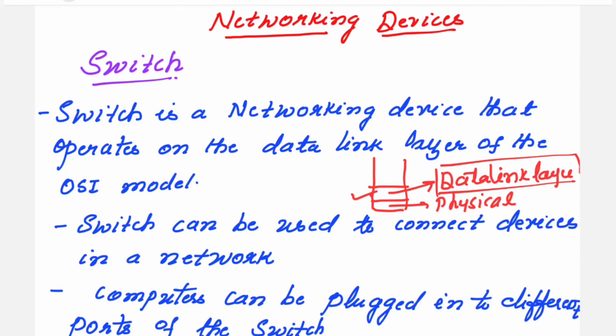Previously we have seen that hub is used to connect devices in a network. Even here we are going to see switch which is a networking device that can be used to connect devices in a network. Actually this switch is a replacement, the combined features of hub and bridge can be found in a networking device called as switch.